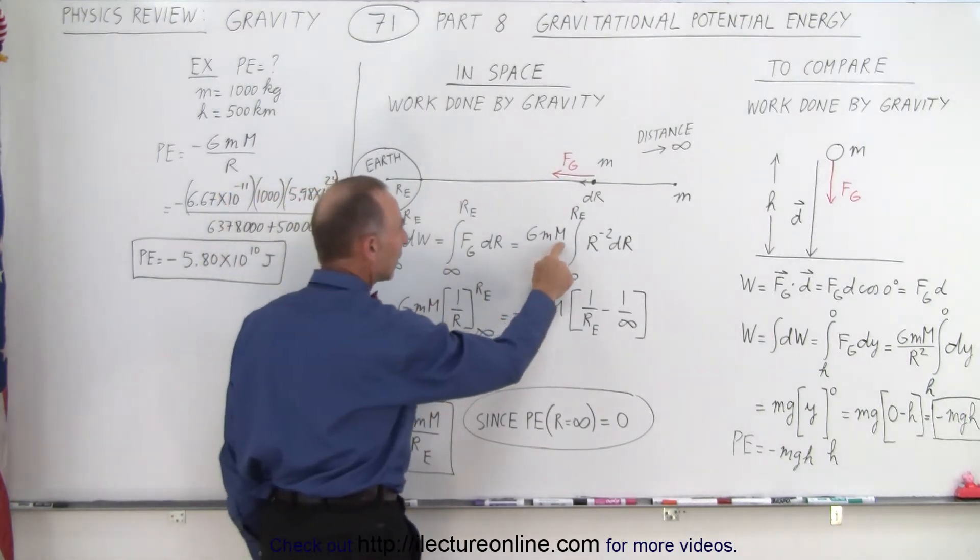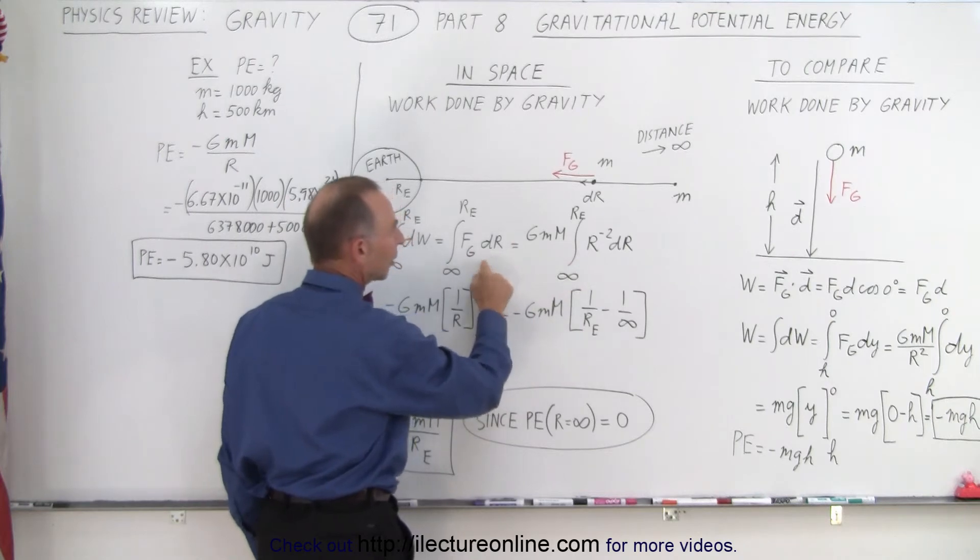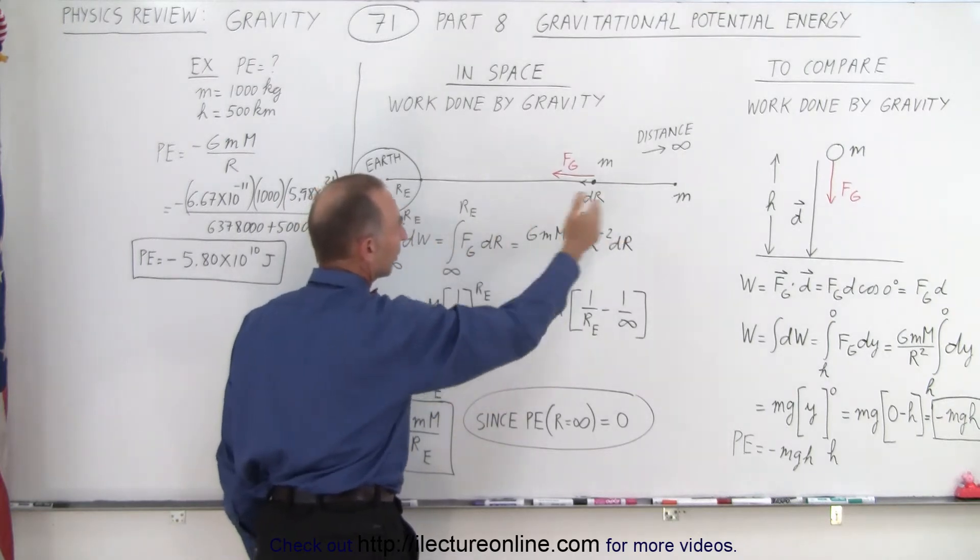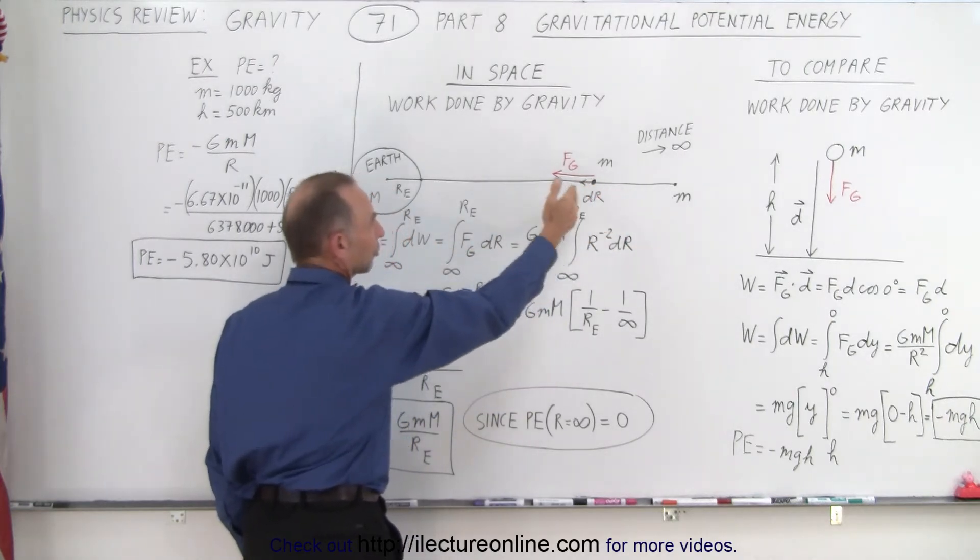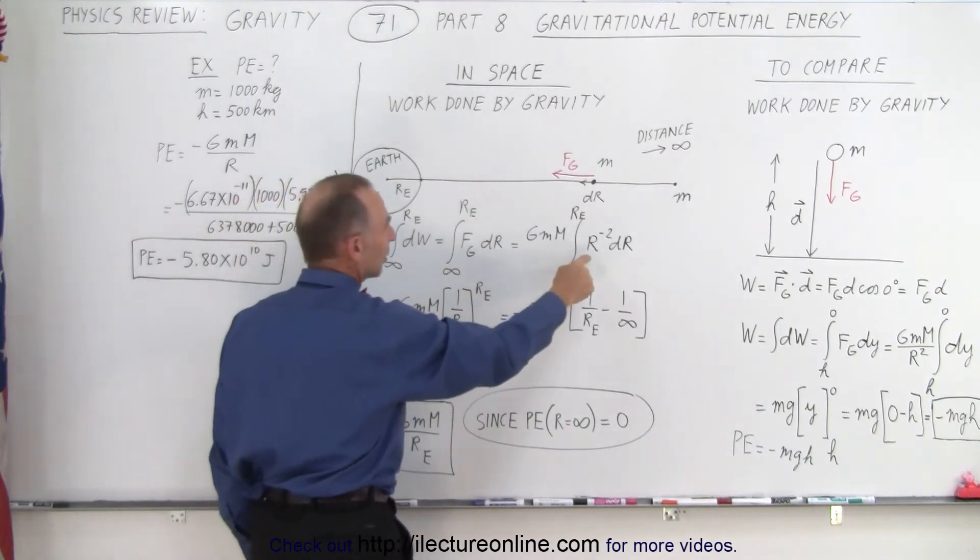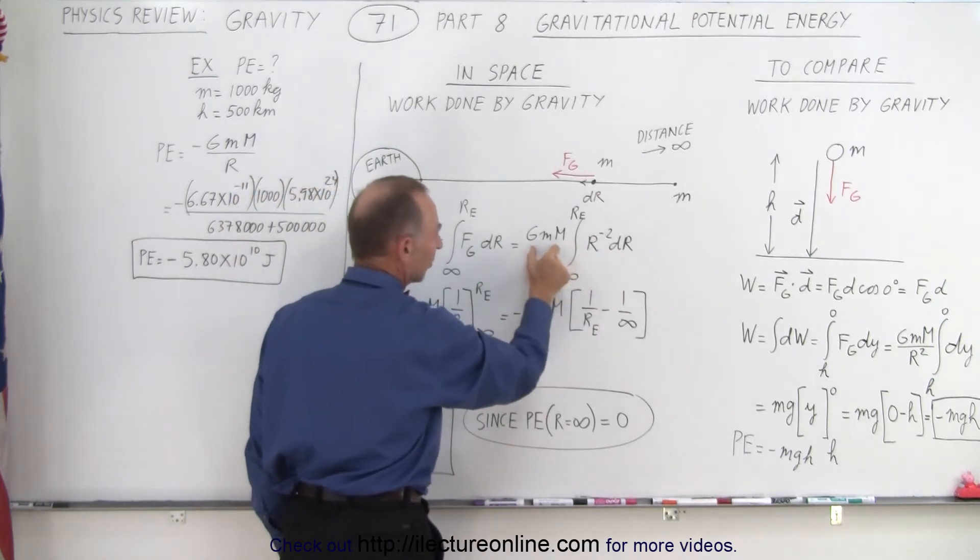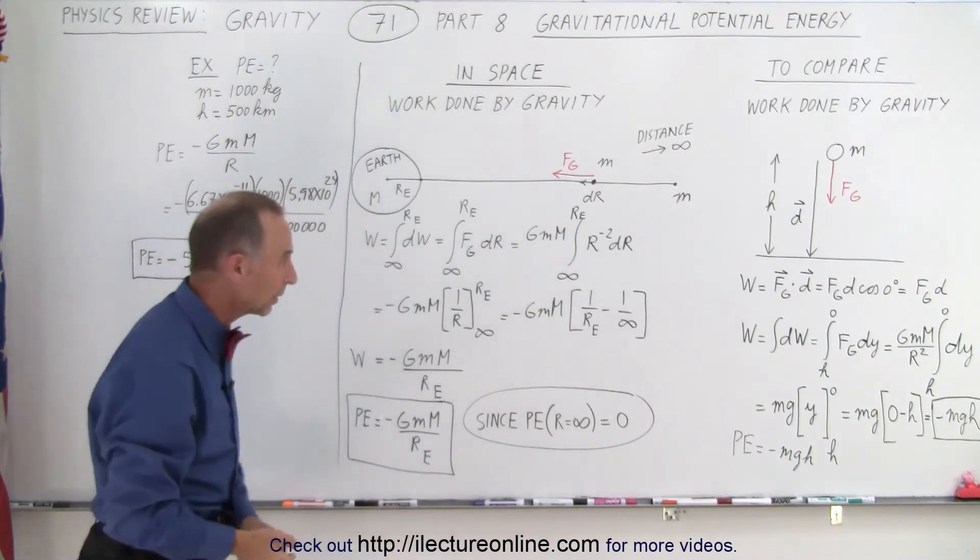Now G, m, and M, those are constants, but r in this case is not. R is going to vary, which of course causes the force of gravity to vary. And so we end up with r to the negative two times dr, since of course r squared was in the denominator.